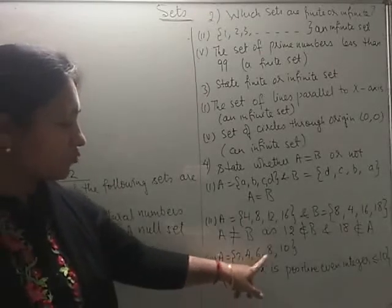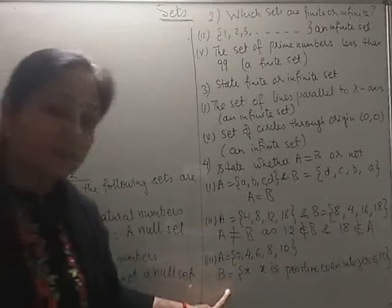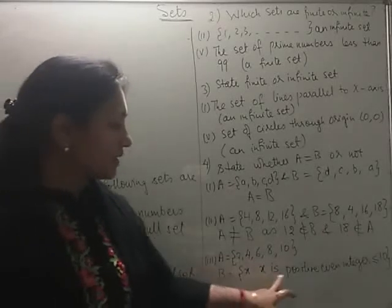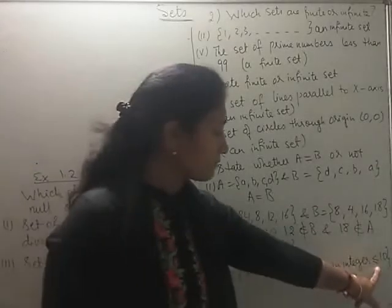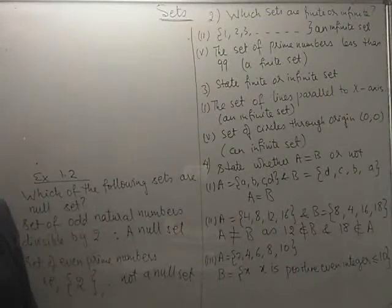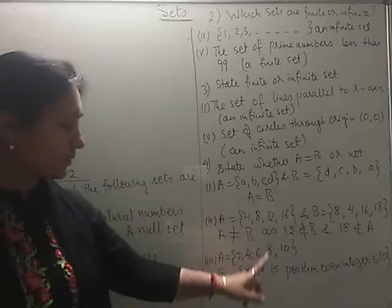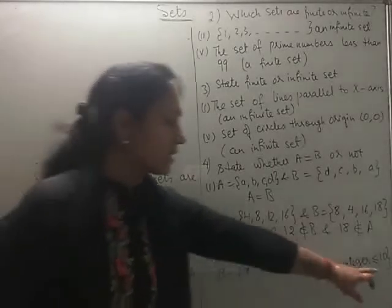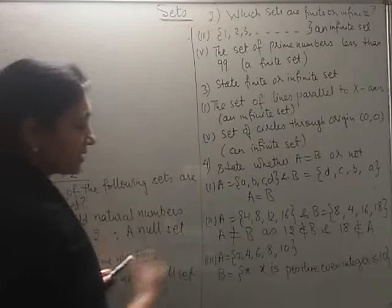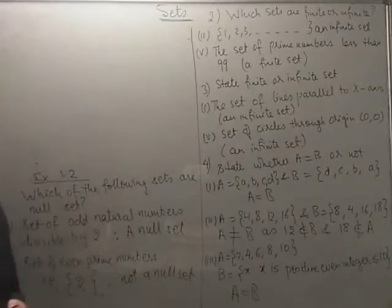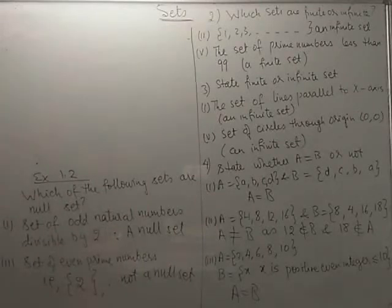Next one. A is having even numbers 2, 4, 6, 8 and 10. B is written in set builder form. It says it contains elements x, where x will be denoting positive even integer. Mark this part, this is important. Positive even integer less than or equal to 10. So 10 is also included here. So start counting what all these numbers are. Smallest positive even integer will be 2. Then we will have 4, we will have 6, we will have 8, and we will also include 10. So exactly the same elements as in A. So we can say that set A is equal to set B.